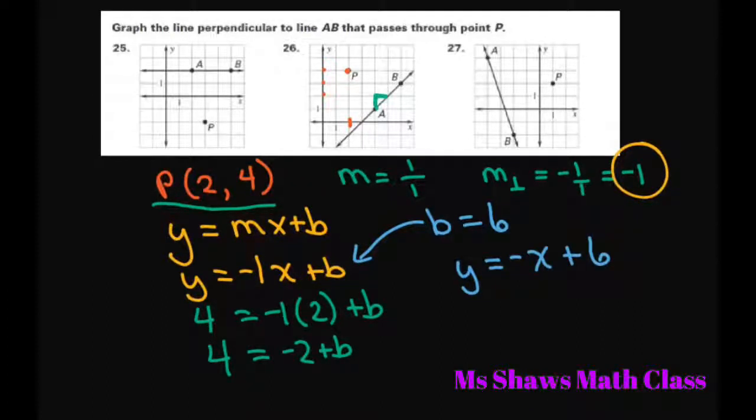So to graph it, I go to my y-intercept, which is 6. This is 4, 5, 6. So it's way up here. And my slope is negative 1. So you go down 1 to the right one. And you can just keep hitting these points. And graph that. And there's your perpendicular line. And you can make a little right angle there.